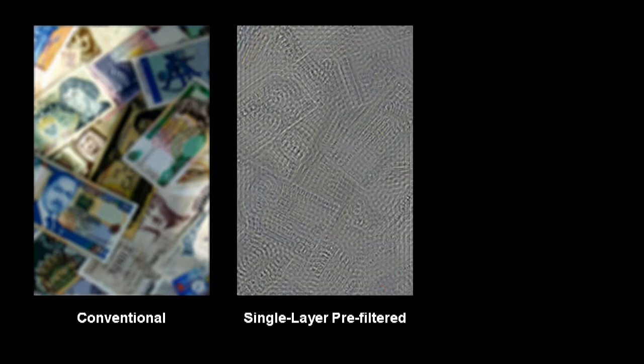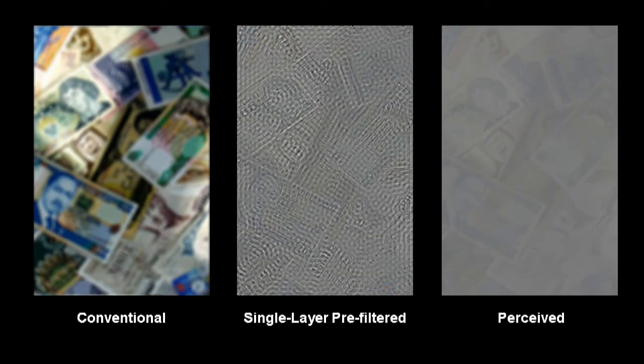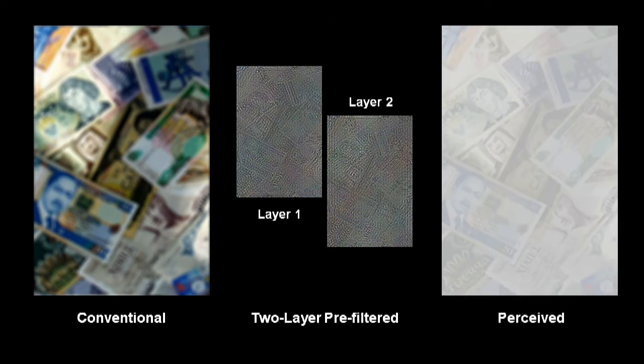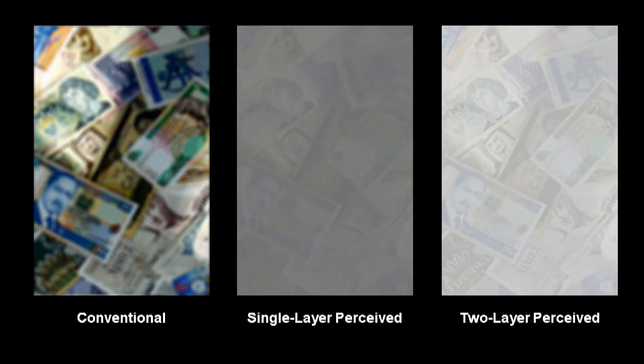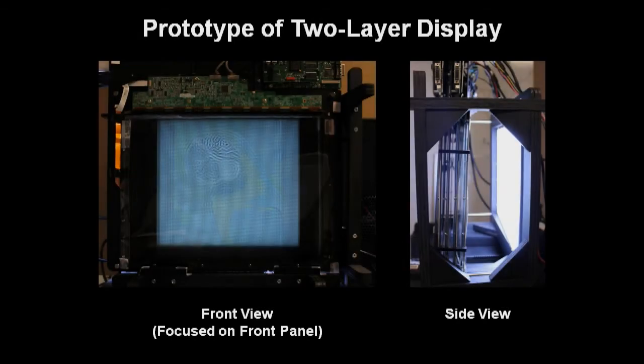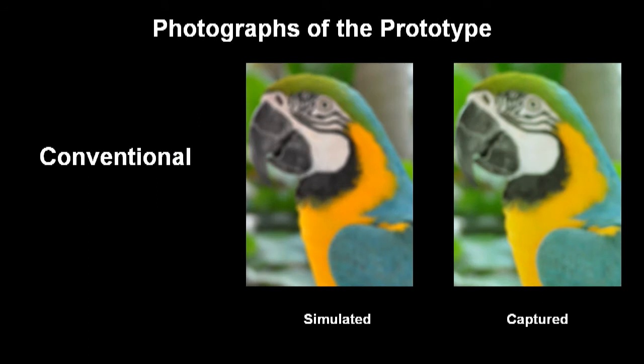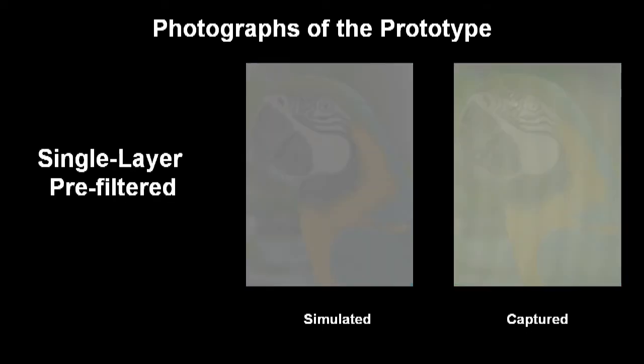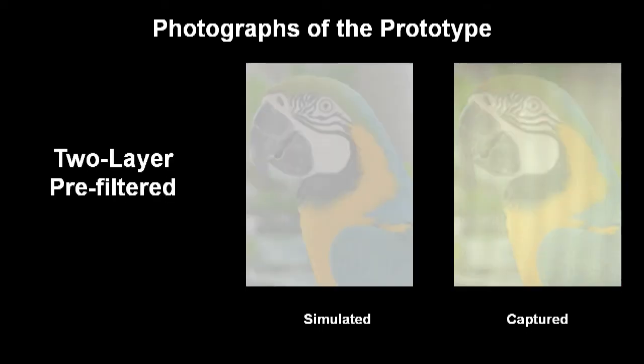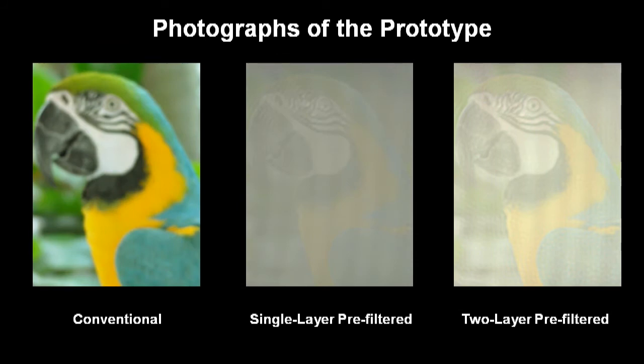Here we show a final example. We assess the real-world performance using a two-layer LCD prototype. Images predicted by simulation and captured with the prototype are compared. Here we compare the blurred images, the single-layer results, and the two-layer results.